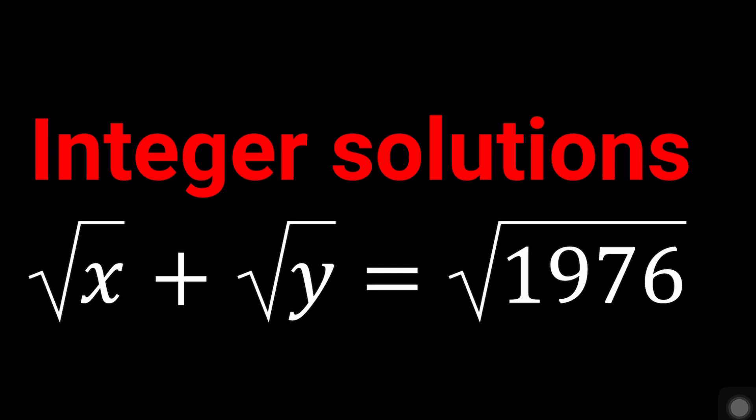You could definitely try to factor 1976 which is something we're going to do later on and try to guess the solution, which could be a method. I'll be showing two approaches basically here. Let's go ahead and start with the first one.